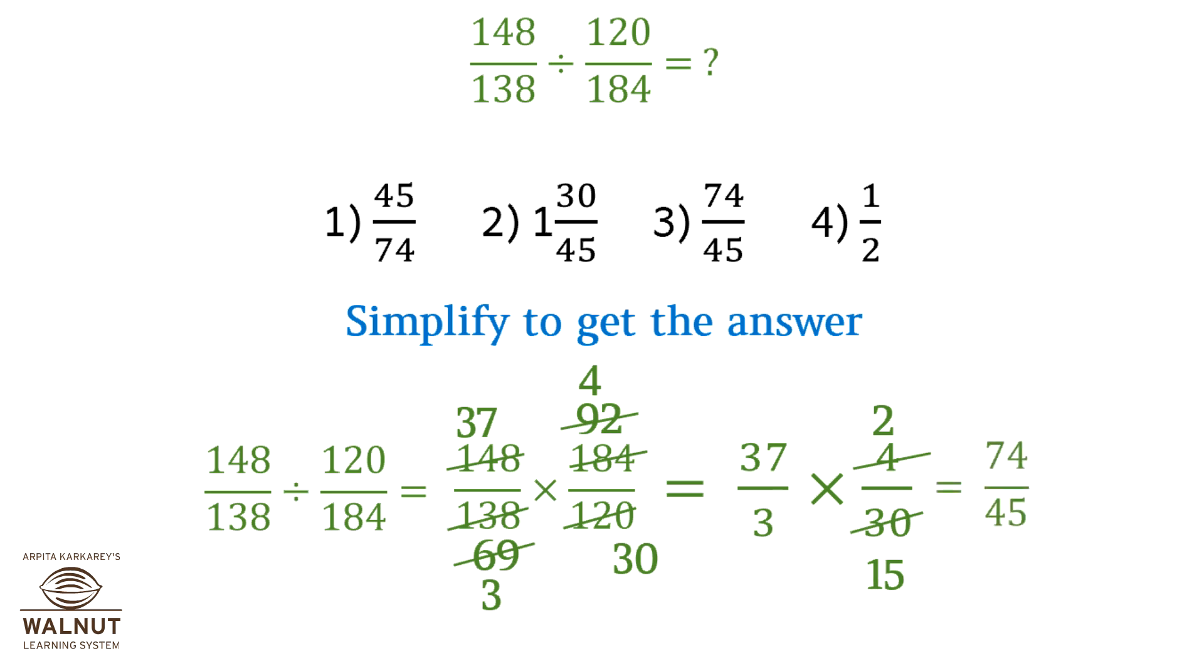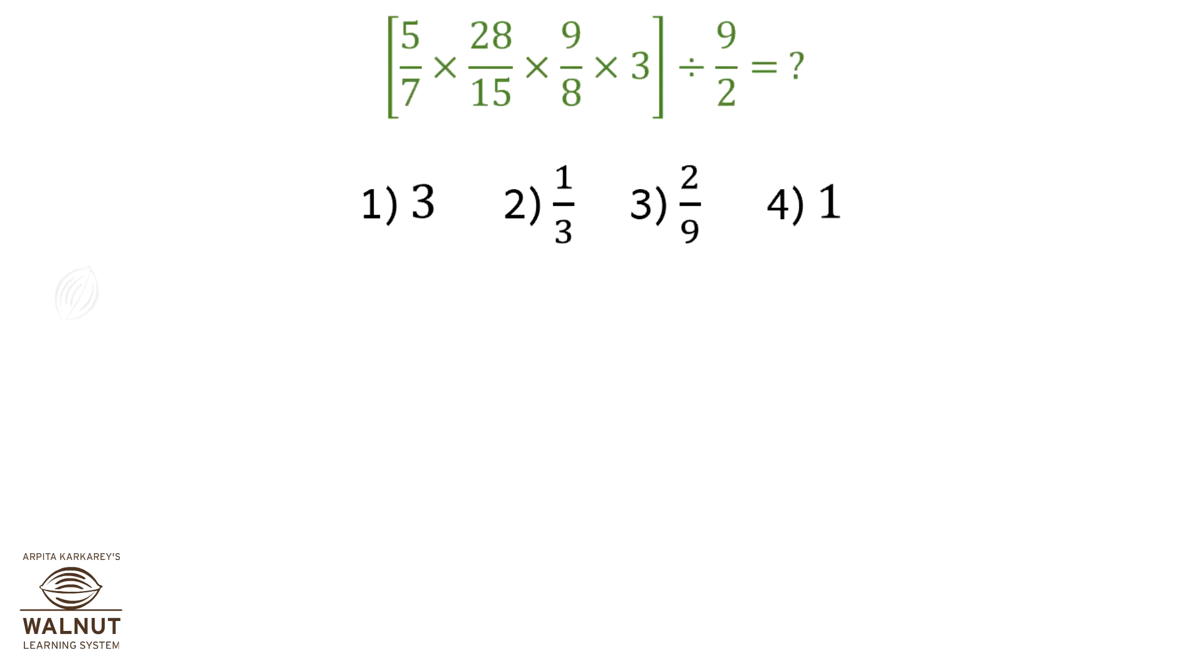So we get 74 upon 45. The correct answer is option 3, 74 upon 45. Let's see another example.